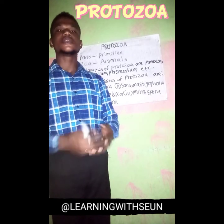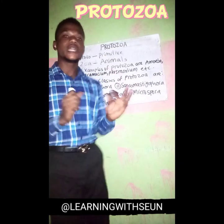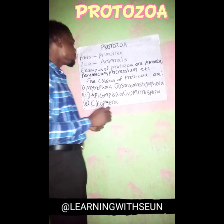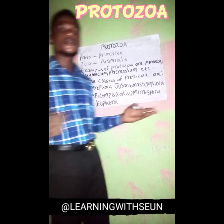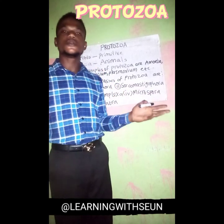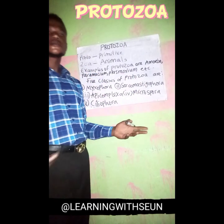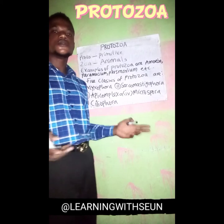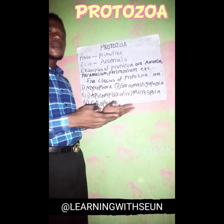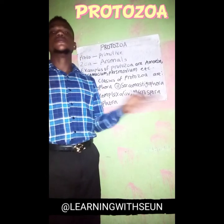Protozoa are animals that can only be seen with the aid of a microscope — that is the meaning of 'primitive'. Now, examples of protozoa include: amoeba, paramecium, plasmodium, chlamydomonas, spirogyra, and many more. They are all called protozoa.